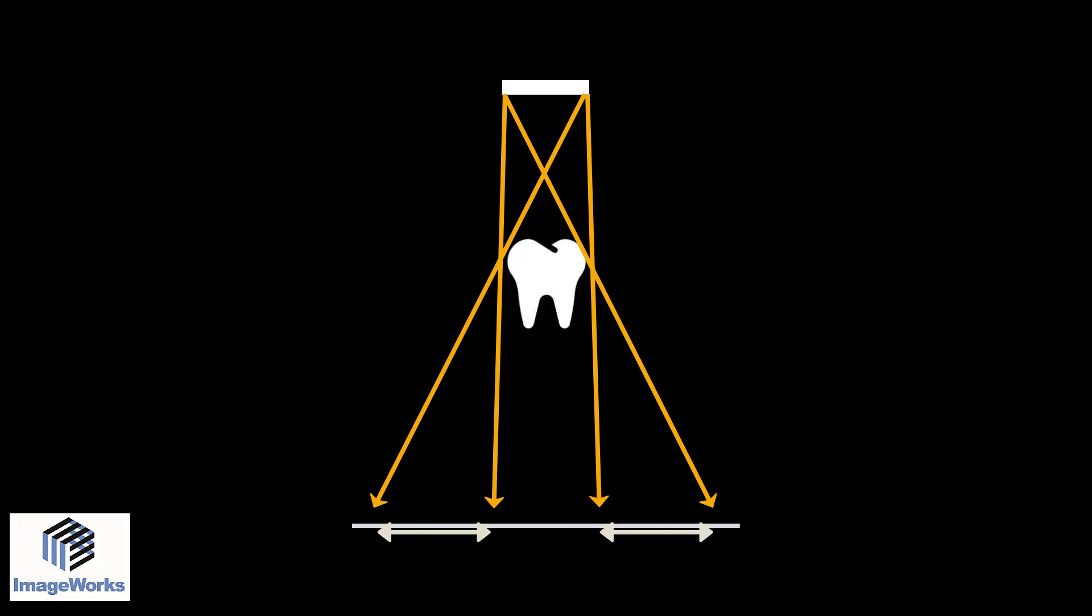The larger this range is, the less sharp the image is. And as you can see, this range is determined by the size of the source or the focal spot size of the x-ray beam.